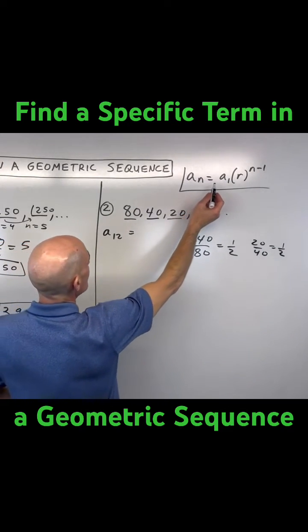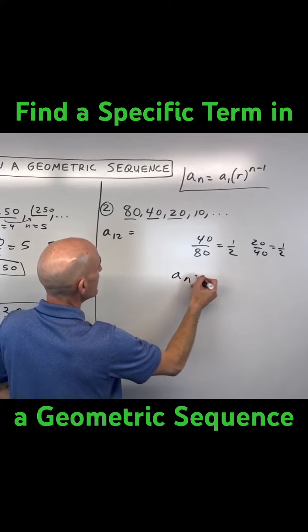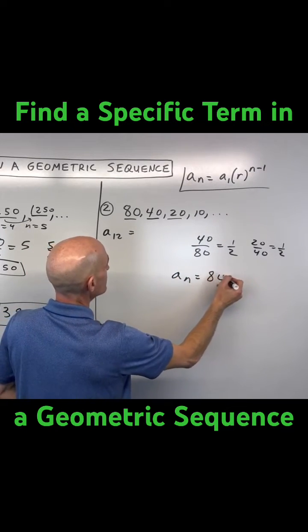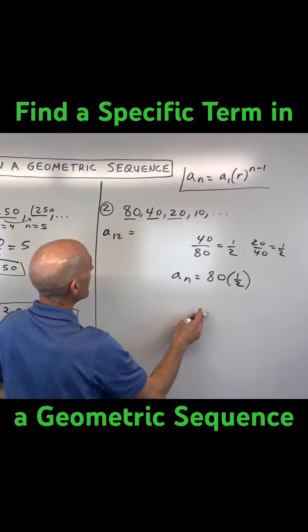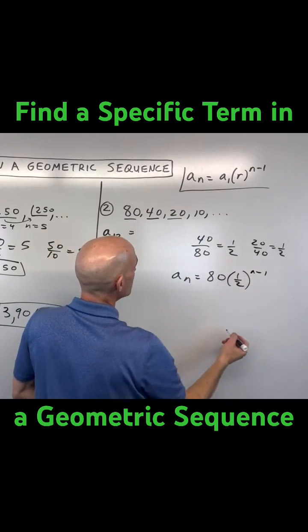So let's go ahead and write a formula first. We'll say a sub n equals a sub 1, which is the value of our first term, 80, times our common ratio, 1 half, to the n minus 1 power.